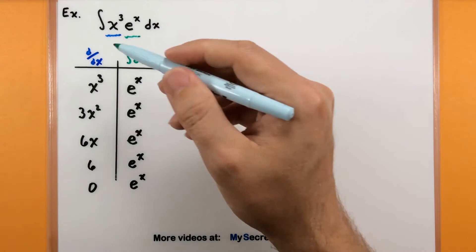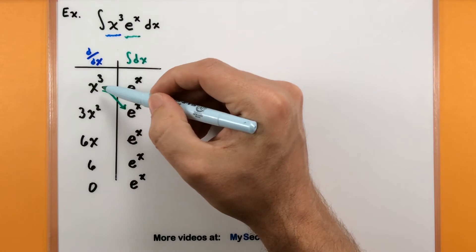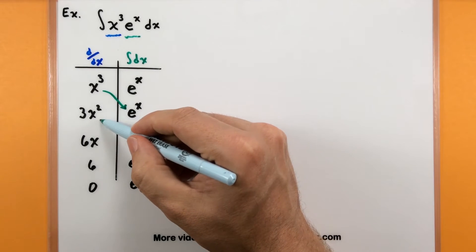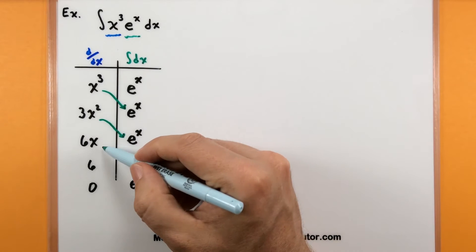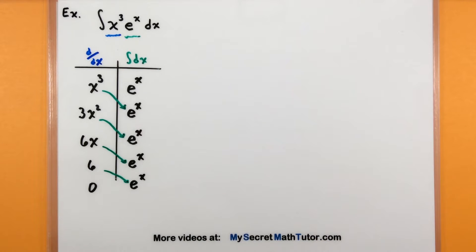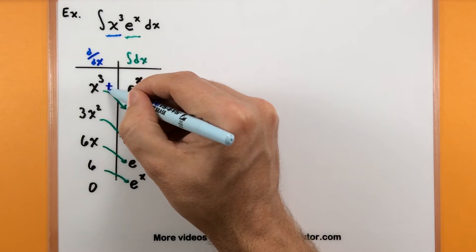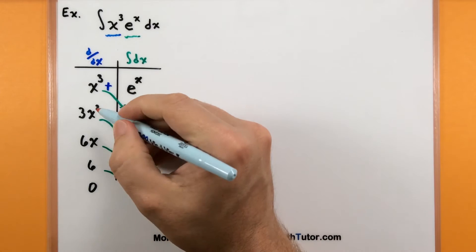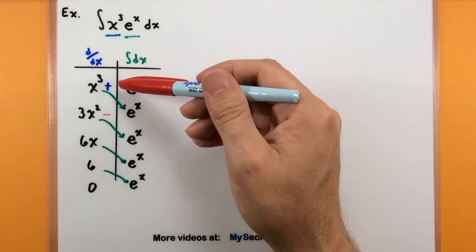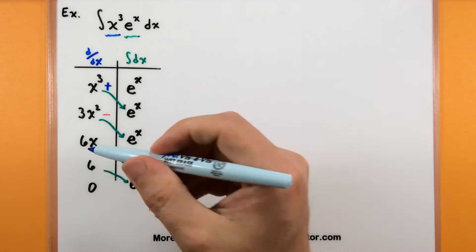We're going to connect the left column with the right column along a diagonal. So x cubed connects with e to the x, 3x squared connects to the next e to the x, and I'll keep connecting along the diagonal until I've run out of terms. Now that I have how these are connected, we want to see what sign they're connected with. The first pair is connected with a plus sign, the next with a minus sign, and you keep alternating as you go down the table: plus, minus, plus, minus.